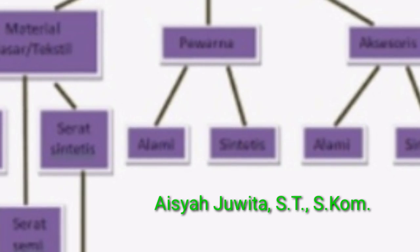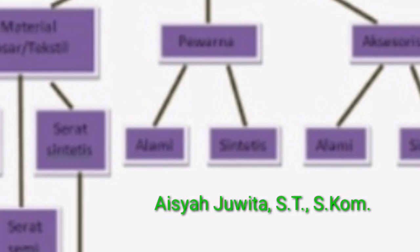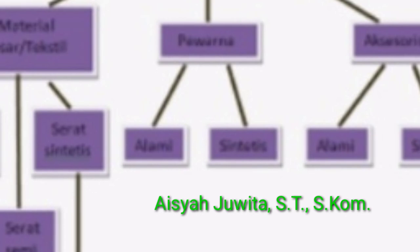Zat pewarna sintetis adalah zat pewarna buatan yang dibuat dari ter batu bara atau minyak bumi. Zat warna sintetis lebih mudah diperoleh di pasaran, memiliki keragaman warna lebih banyak, dan menyediakan warna terang. Zat warna sintetis dapat menghasilkan warna yang konsisten dan mudah diserap oleh tekstil dengan serat alami maupun tekstil dengan serat sintetis. Kelemahan pewarna sintetis adalah belum tentu aman untuk manusia dan alam.